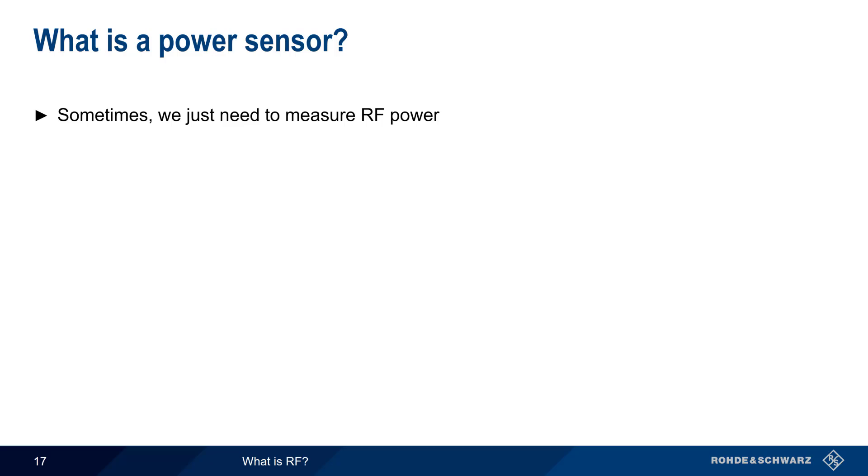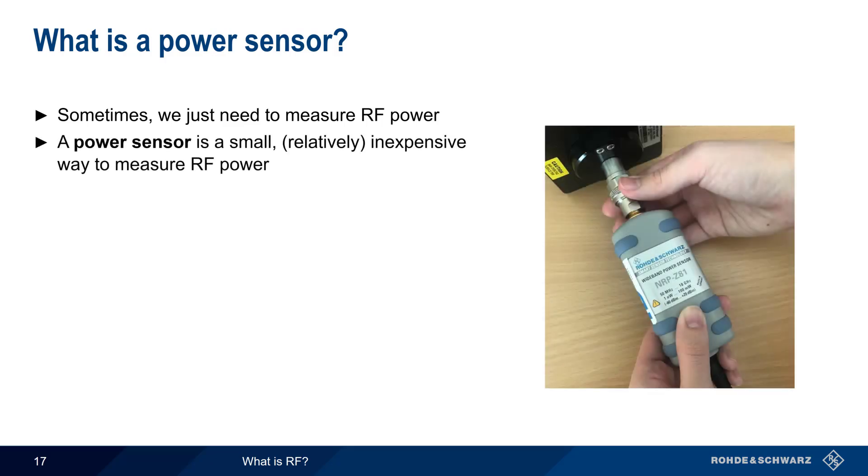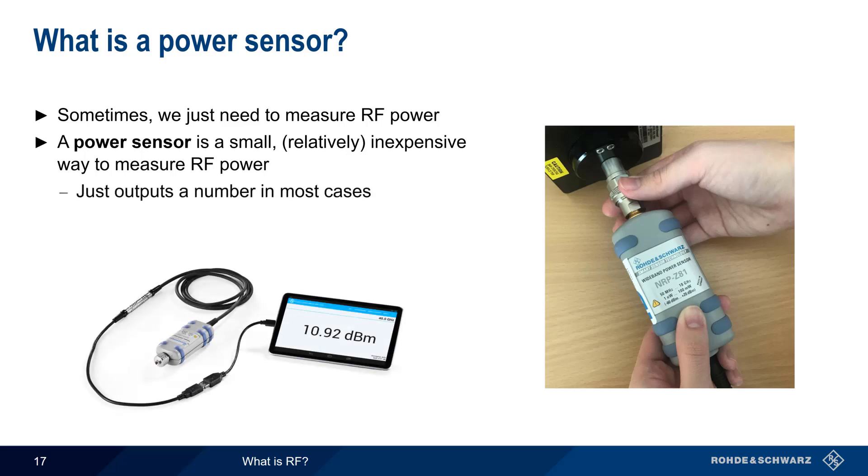Sometimes our goal in RF testing measurement is just to measure RF power. Although spectrum analyzers and VNAs can measure RF power, small, relatively inexpensive instruments called power sensors are often used when all we need is a simple measure of received power. The basic functionality of a power sensor, therefore, is simply reporting a number, such as 10.92 dBm. Power sensors may not be as sophisticated as the other instruments we've mentioned, but they're very widely used in the RF world, and can be easily found in most RF labs.